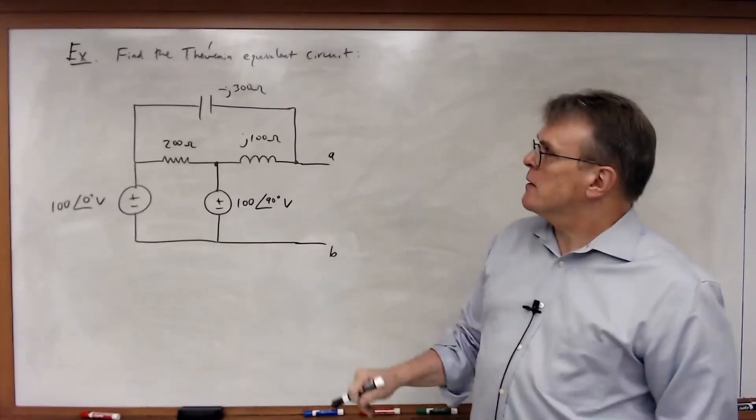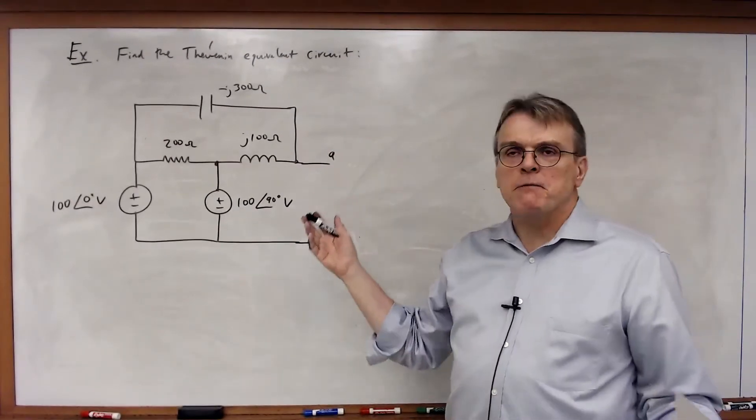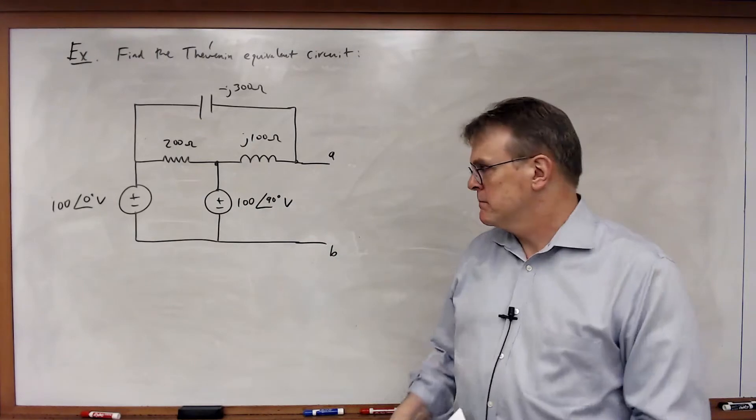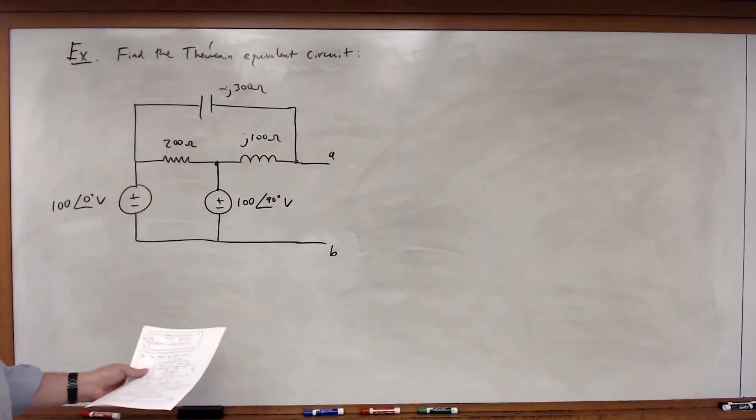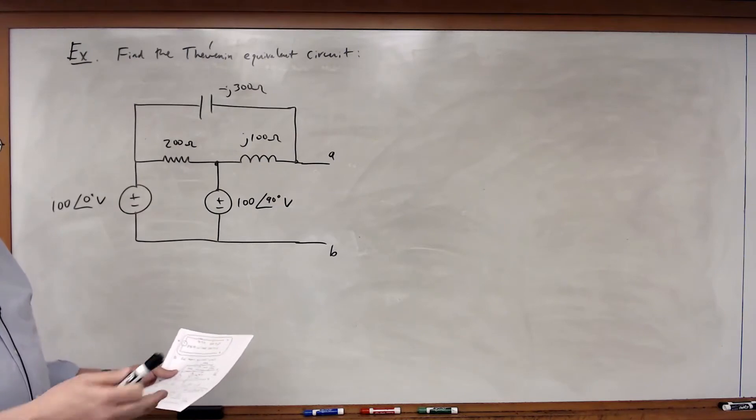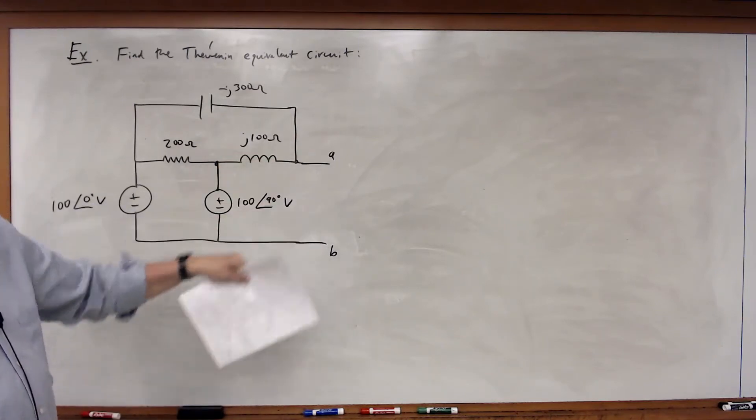In this case, you're given a circuit and asked to find the Thevenin equivalent circuit. We're going to apply the standard technique: find the open circuit voltage, then find the Thevenin equivalent impedance between A and B.